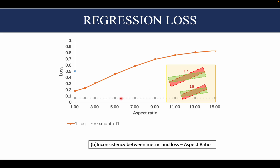So we see that in this case, if we increase the aspect ratio, the smooth L1 loss would be constant. But if we look at the IOU — which is given by this overlap area — this would go on decreasing. So 1 minus IOU goes on increasing. Again, we see that there is an inconsistency between the metric given by the IOU and the loss, that is the smooth L1 loss.